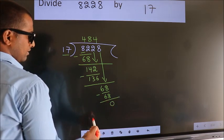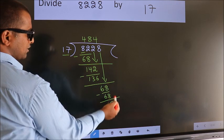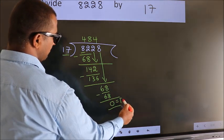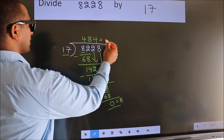No more numbers to bring down, so we stop here. This is our remainder. This is our quotient.